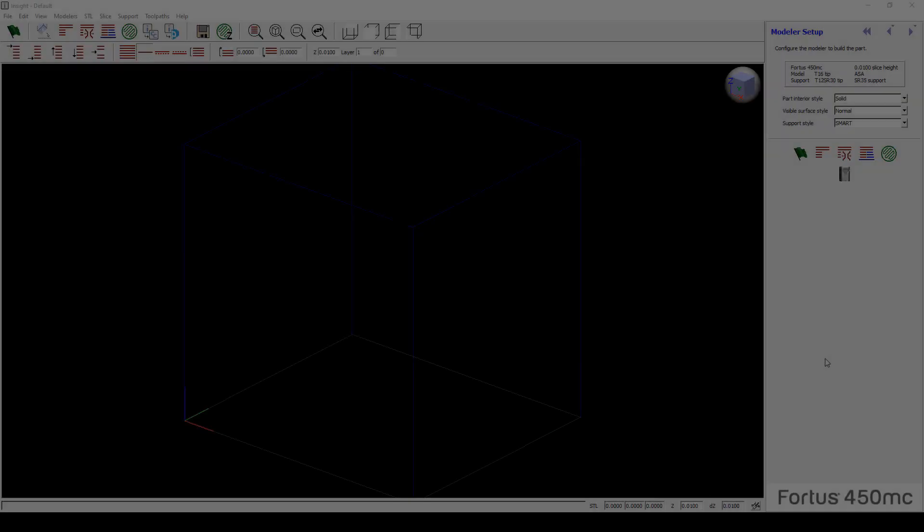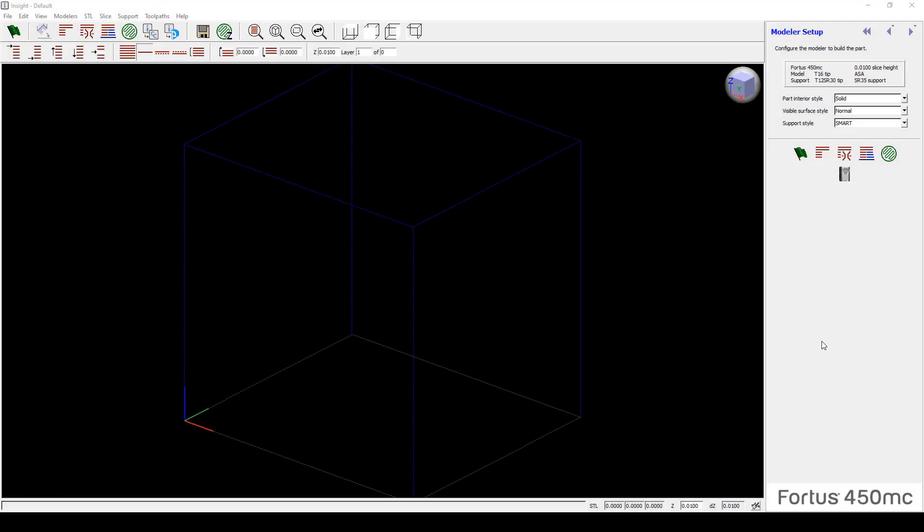Moving on. Taking a look at Insight. In the Insight software, focusing on the right hand side under the Modeler Setup, under Modeler Setup, you can see that I have in the bottom right corner selected a Fortis 450MC. You can change that and all other applicable information in the Modeler Setup, being the material and tips under the Machine icon.